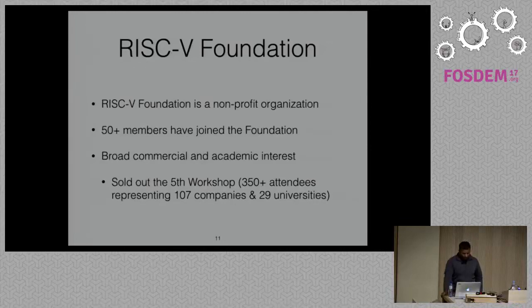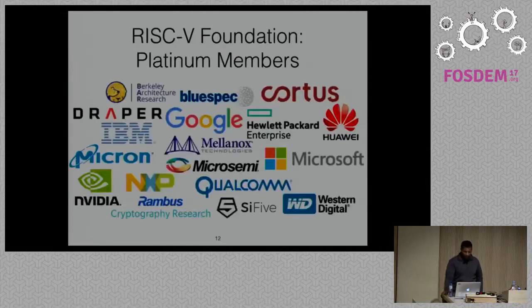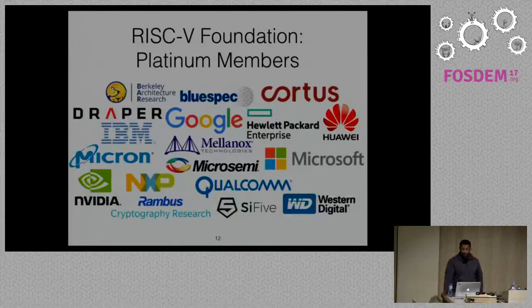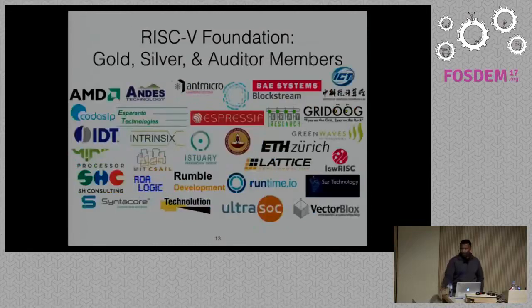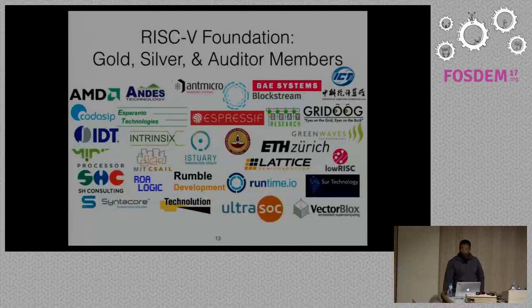Some members of the RISC-V Foundation include fairly large companies: Berkeley of course, but also Google, Hewlett Packard Enterprise, Huawei, IBM, Mellanox, Micron, Microsemi, Microsoft, NVIDIA, NXP, Qualcomm, SiFive, and Western Digital — there are a lot of big companies evaluating RISC-V for their products and research. Other members include AMD, ETH Zurich, MIT, and LowRISC. These slides are a little out of date — a few more have been added, and the RISC-V Foundation is doing pretty well.